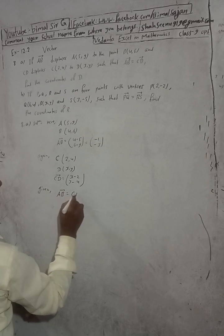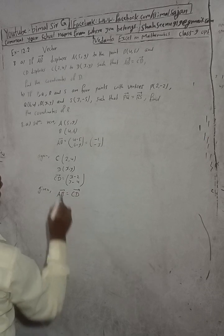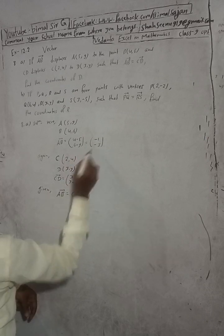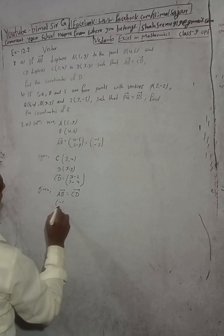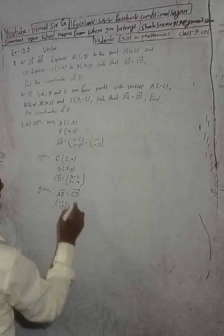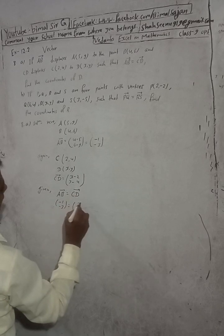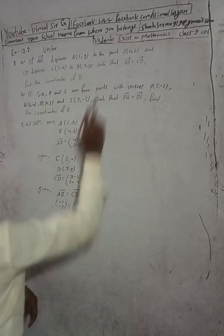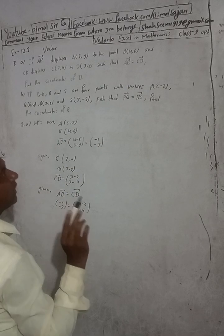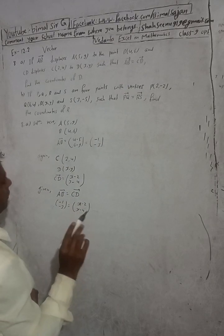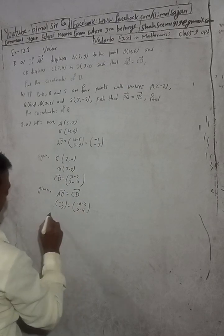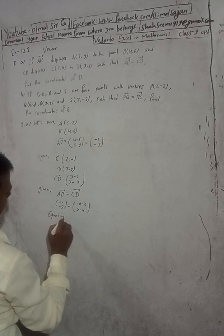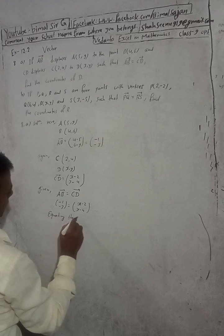AB vector is equal to CD vector. So AB vector is (-1, -3) and CD vector is (x minus 2, y minus 4). Since these two vectors are equal, the corresponding elements are equal. Equating the corresponding elements of equal vectors.